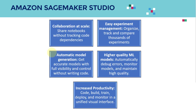Here are the five key features of Amazon SageMaker Studio. First is collaboration at scale — you'll be able to share notebooks without tracking any code dependencies, making integration very easy and seamless. The second is easy experiment management — you will be able to organize, track, and compare thousands of experiments in just one place, which is especially valuable if you've done AI and ML projects before and know how hectic managing experiments can be.